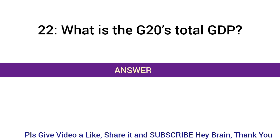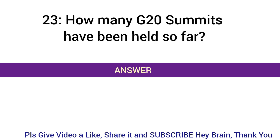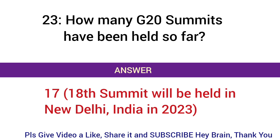What is the G20's total GDP? Answer: The G20's total GDP is approximately 80% of the world's GDP. How many G20 summits have been held so far? Answer: 17; the 18th summit will be held in New Delhi, India in 2023.